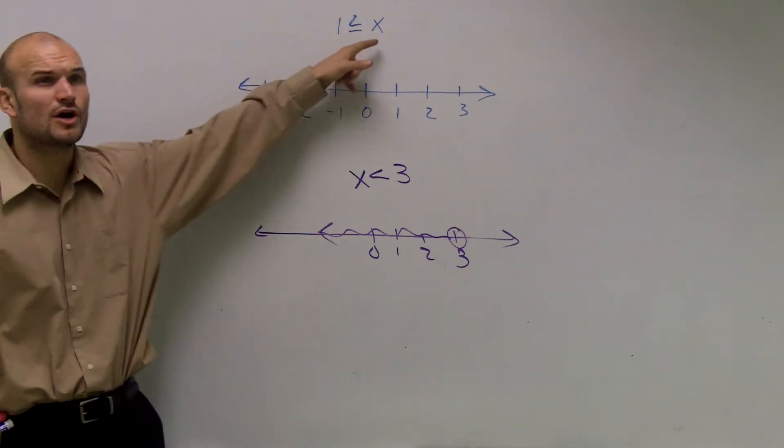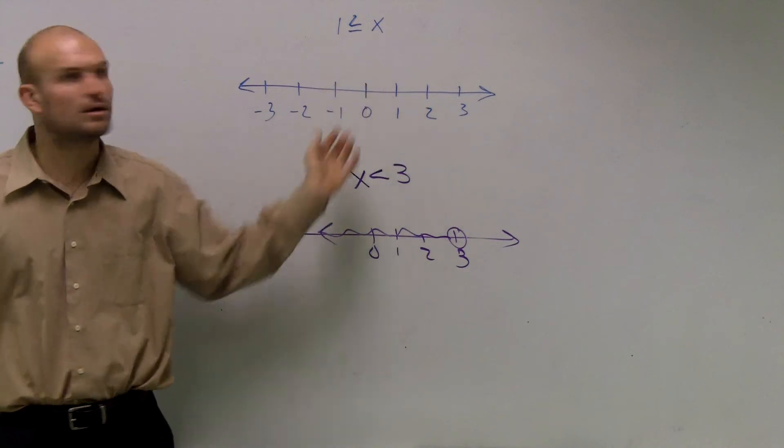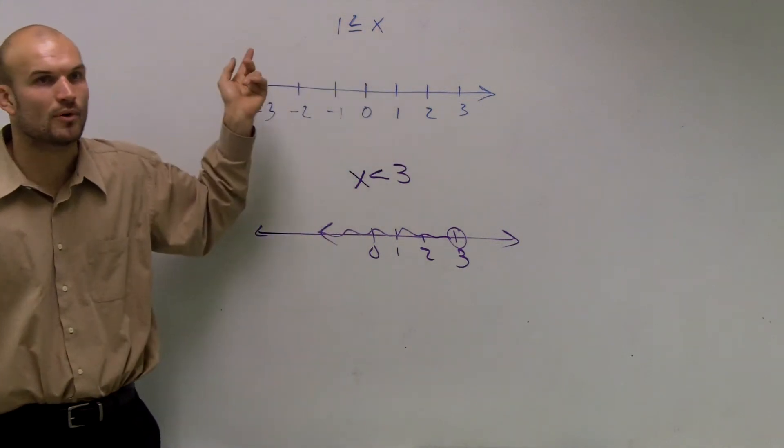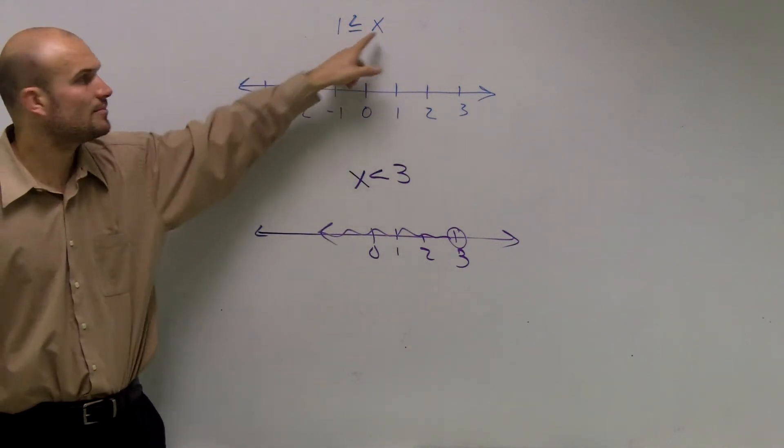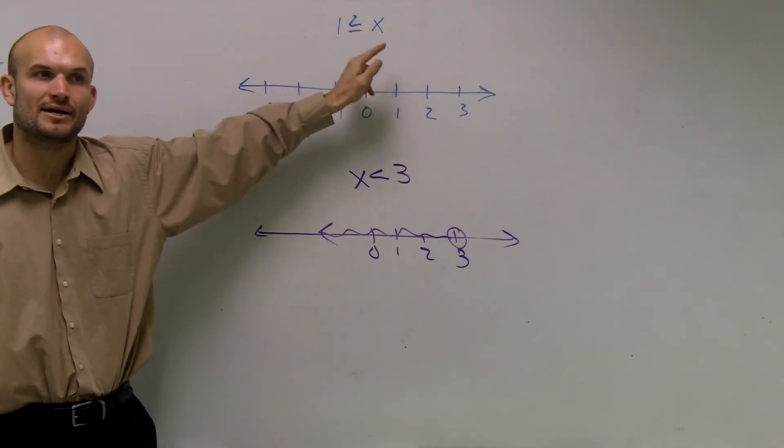So, here though, a lot of students will get this and be like, oh, well, yeah, it always goes to the left. It goes where the arrow points. No. Here, my variable is on the right side. It does not follow that pattern.